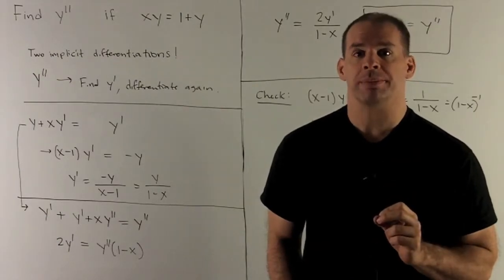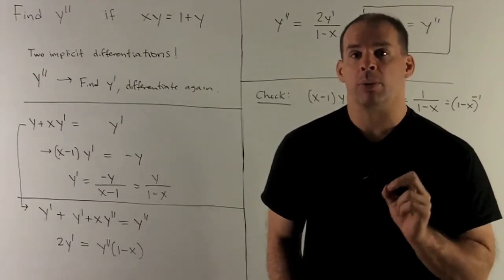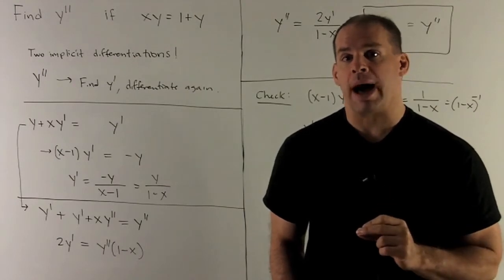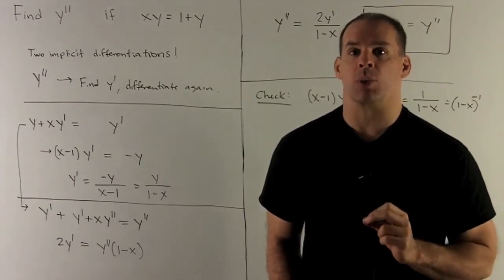Using implicit differentiation, find y double prime, the second derivative of y, if xy equals 1 plus y.